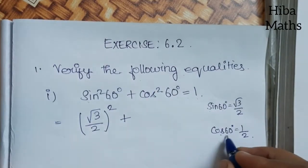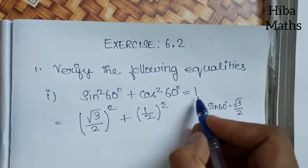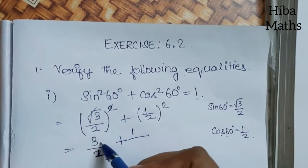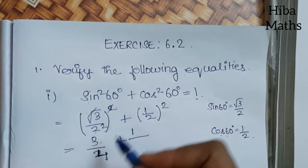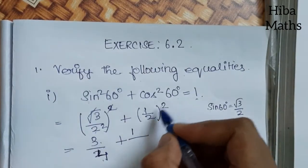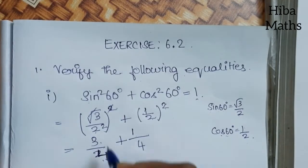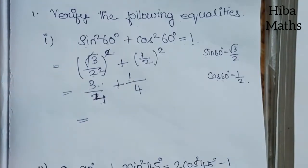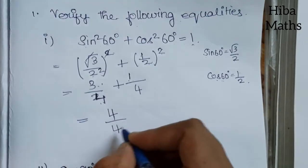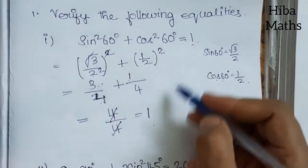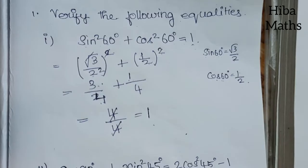Plus cos60° value is 1/2, so cos²60° = (1/2)². Solving: (√3/2)² = 3/4, and (1/2)² = 1/4. So 3/4 + 1/4 = 4/4 = 1. The denominator is 4, and 3 + 1 = 4, so 4/4 = 1. Proof is correct. The statement equals 1.